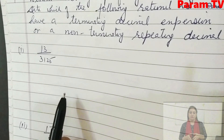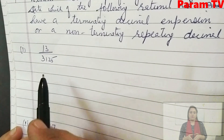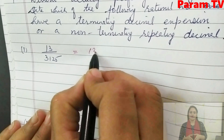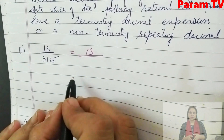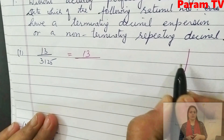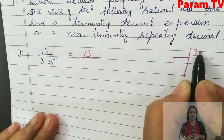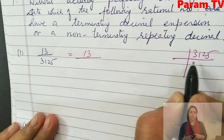Here we don't have to divide. What do we do? We take prime factors of the denominator. So here, you have to make prime factors: 3, 1, 2, 5.